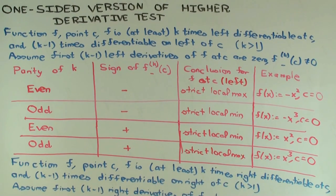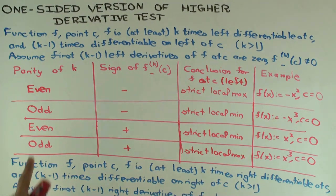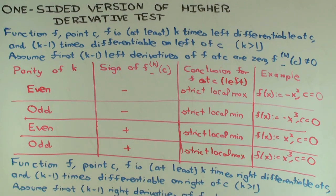Now suppose I ask you to explain any one of these four cases in great detail — why is this true? Let's pick an actual value of k and an actual sign. Since we already did the second derivative test with k equals 2, let's pick a bigger even number — let's say k equals 4.